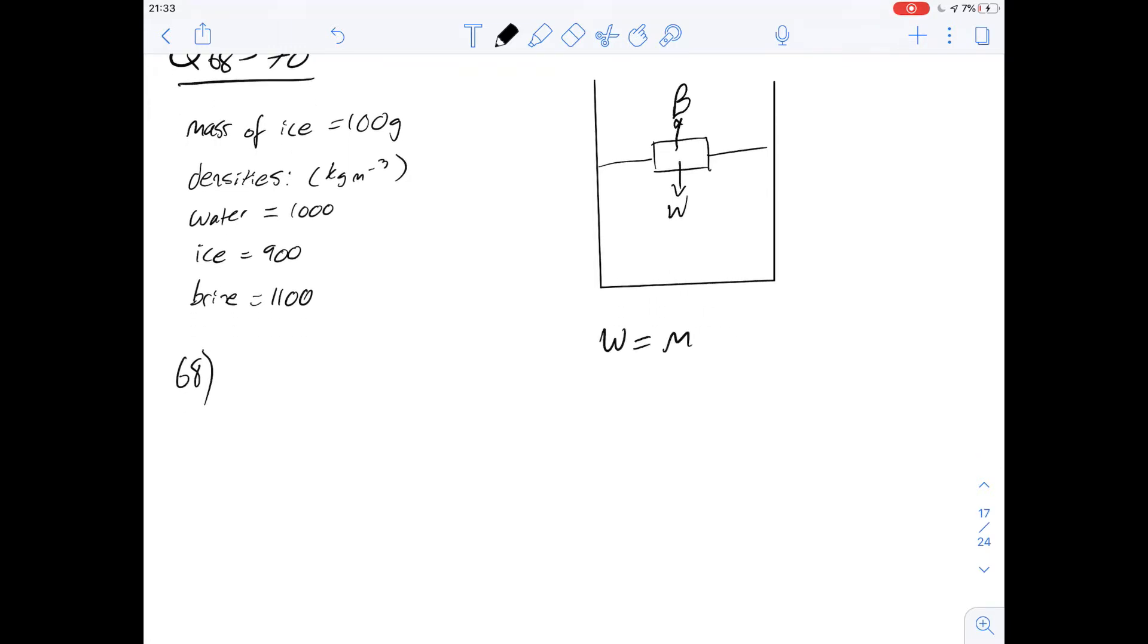So we know the equation for weight is mass times gravity, so we can work out straight away that the weight is going to be 0.1 kilograms times 10, so the weight is going to be 1 newton of force.